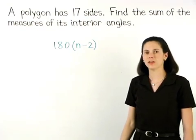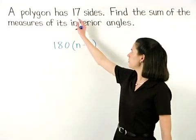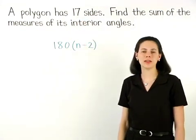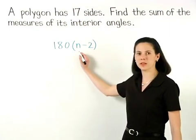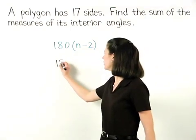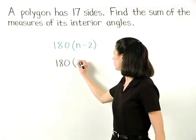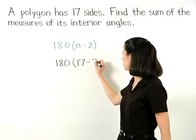So here, since our polygon has 17 sides, we can plug a 17 in for the n in our formula, and we have 180 times 17 minus 2.